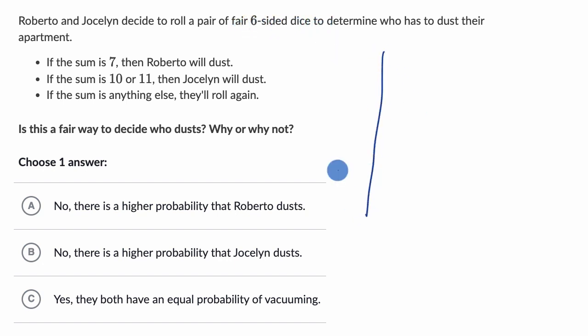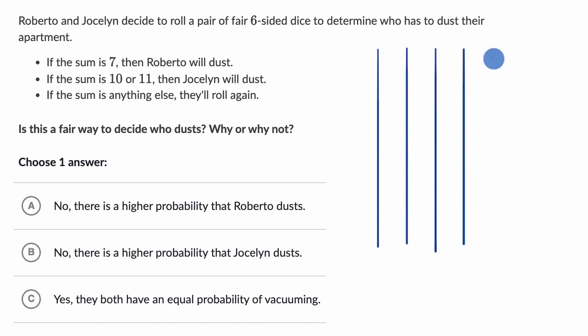So let me make columns for roll one. So that is, you get a one, this is when you get a two, this is when you get a three, this is when you get a four, this is when you get a five, and then this is when you get a six.